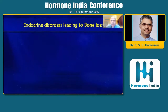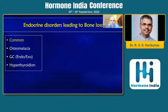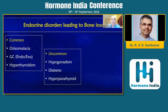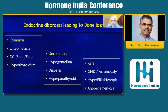Coming to endocrine disorders per se leading to bone loss, the common ones are osteomalacia — be it calcium or phosphorus deficient — or a glucocorticoid excess condition, either endogenous or exogenous. Hyperthyroidism also obviously affects the bone. Reasonably uncommon or possibly underlooked are hypogonadism, diabetes, and hyperparathyroidism. Rarely, conditions like growth hormone deficiency, acromegaly, hyperprolactinemia, and anorexia nervosa can also affect bone loss. This is the spectrum of endocrine disorders which can affect the bone.